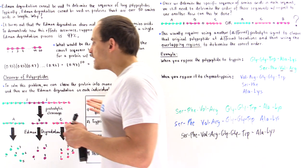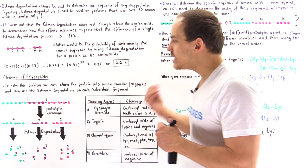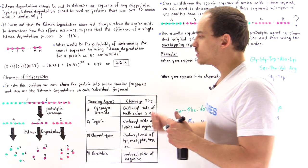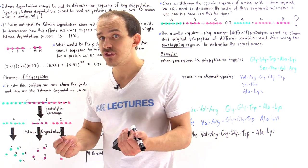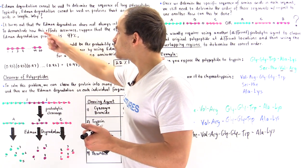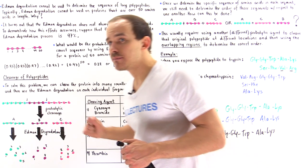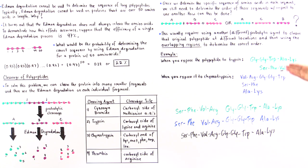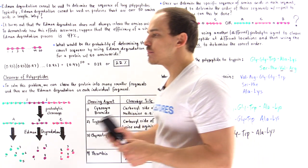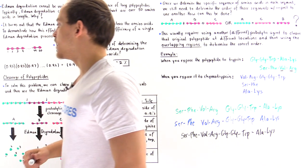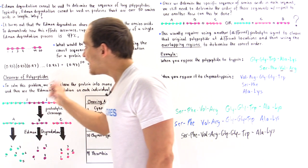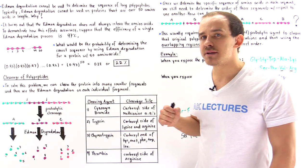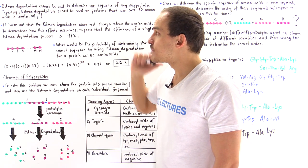To summarize the procedure: first, take the long polypeptide and cleave it with different types of proteolytic enzymes and molecules to produce segments. Then isolate those segments using a purification method. Next, use the Edman degradation process to sequence each segment. Finally, use the overlapping region information to determine how the segments should be arranged relative to one another. Even though the Edman degradation process does not work directly on very long polypeptides, by cleaving them into small fragments we can successfully use it to determine the full polypeptide sequence.